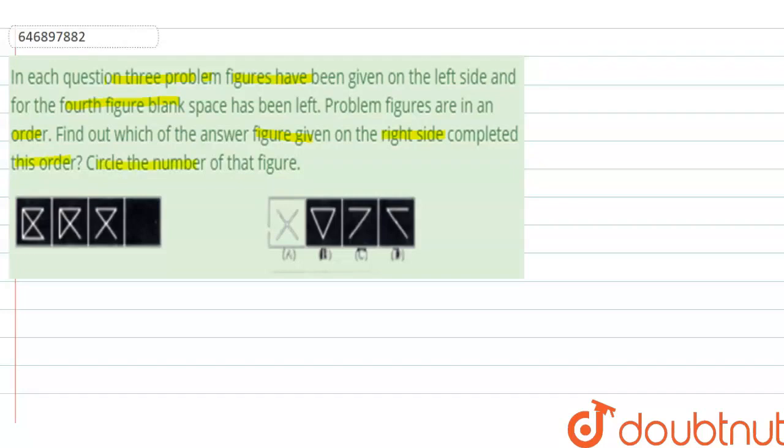So kids, we have three figures given on the left side with a blank space for the fourth. On the right side, four answer figures are given. We have to find which of these four figures completes the pattern on the left side. So children, let's see.